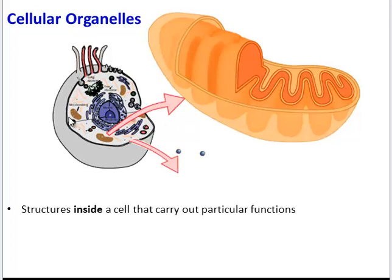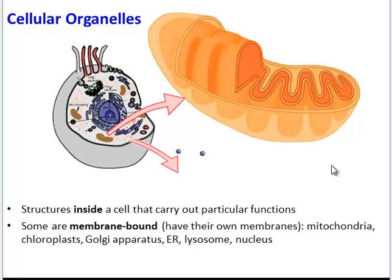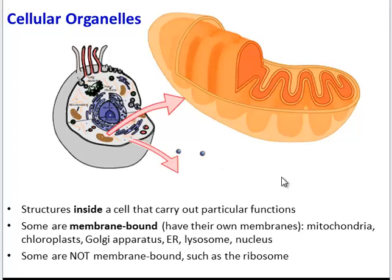So not only does the cell itself have a plasma membrane, but some organelles — like the mitochondria, lysosome, nucleus, ER, and Golgi body — they get their own membranes. There are other organelles, however, like the ribosome, that do not have membranes. They are not membrane-bound. A ribosome is really just a clump of proteins and RNA, nothing else.